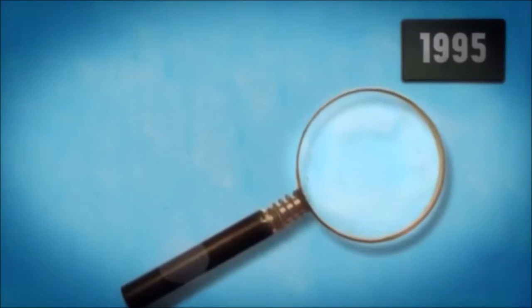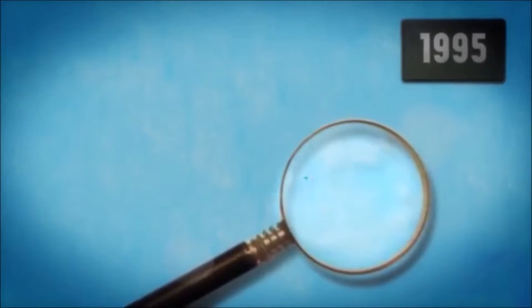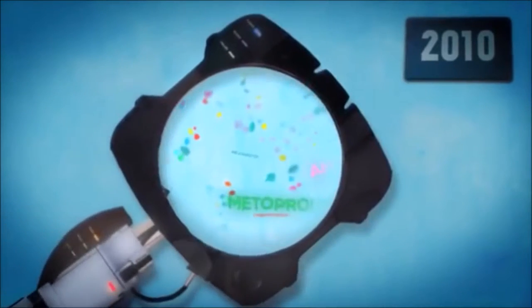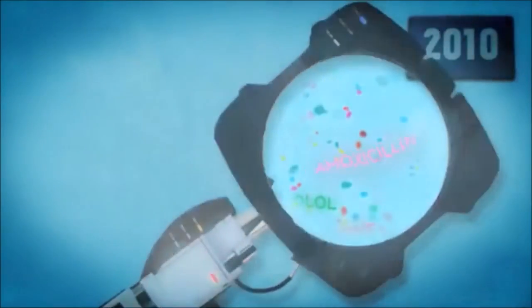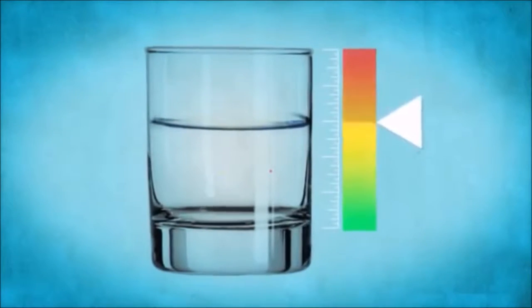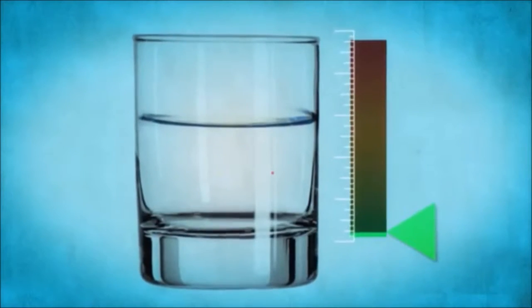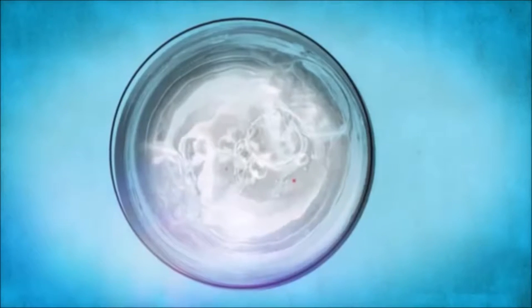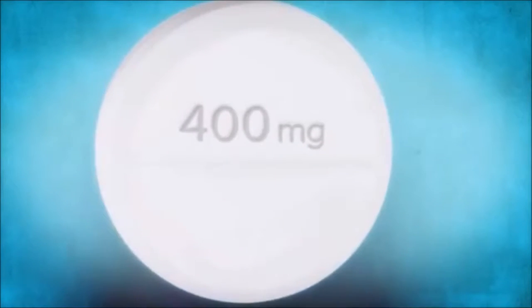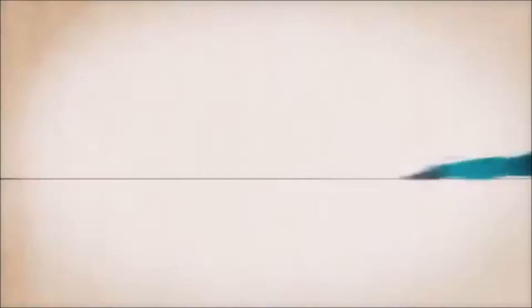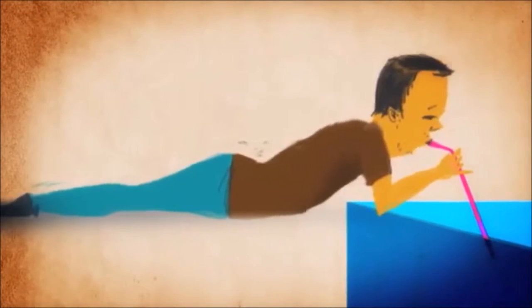Detection methods have improved enormously and we can now measure substances at levels up to 1,000 times lower than we could only 15 years ago. And yes, these improvements have shown that drinking water sometimes contains very low concentrations of pharmaceuticals. So how low? Well, if you wanted to consume the 400 milligrams of a typical ibuprofen pill, you would have to drink around 200 million liters of tap water, which makes about 40 Olympic-sized swimming pools.